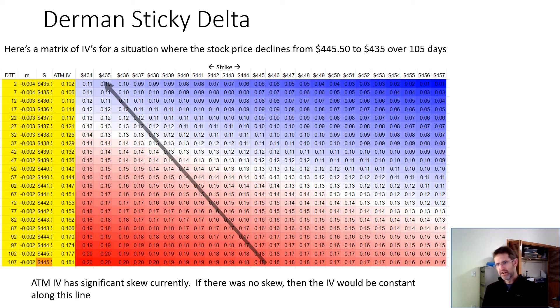So with Derman, if at-the-money IV didn't change with time, if there was no skew, then if you follow that kind of line, the at-the-money line, basically the stock price line from $445.50 down to $435, the IV would be constant along that line.